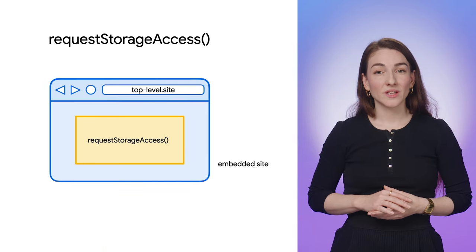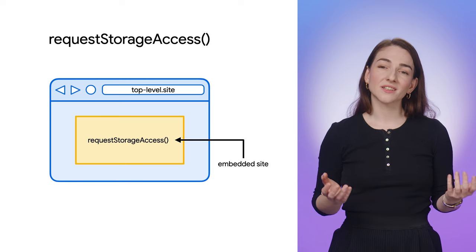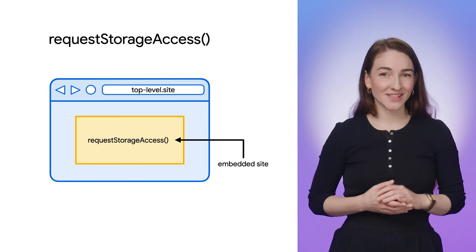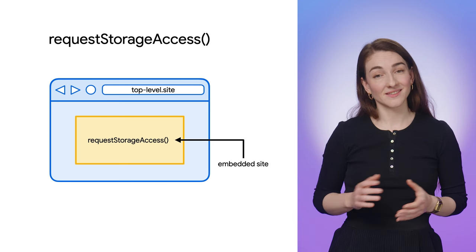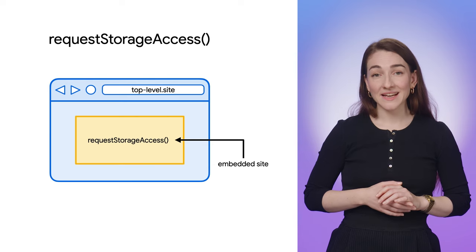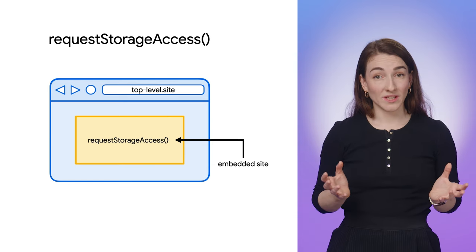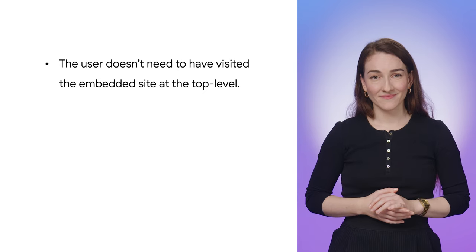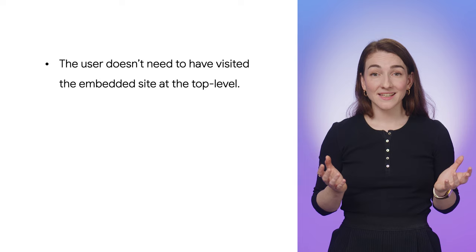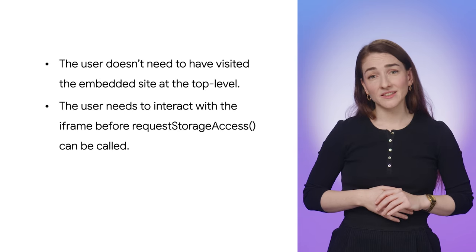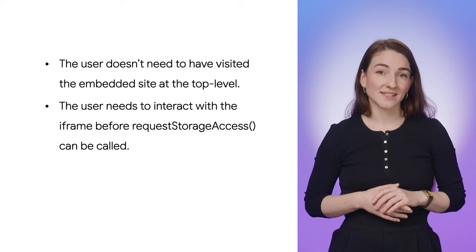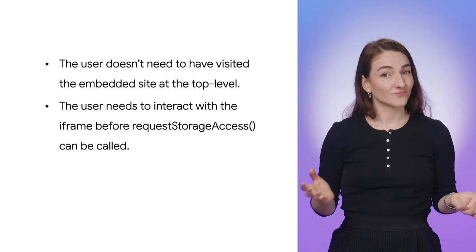Let's look at how you can integrate related website sets with your website. Storage Access API provides a way for embedded cross-site content to check whether it currently has access to browser-based storage, such as cookies, and to request storage access if it doesn't. The requestStorageAccess can only be called from within an iframe. Using Storage Access API within a related website set provides a smoother user experience. The user does not need to have visited the embedded site at the top level, but the user does still need to interact with the iframe before requestStorageAccess can be called, for example, by clicking a button or a link.